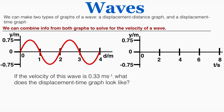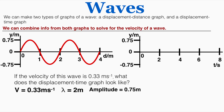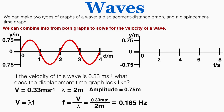We can also create graphs of motion given the other graph and the velocity. If the velocity of this wave is 0.33 meters per second, and the wavelength from the displacement-distance graph is 2 meters with an amplitude of 0.75 meters, plugging into the velocity equation and rearranging gives a frequency of 0.165 Hertz, and therefore a period of 6 seconds. So this wave has a period of 6 seconds and an amplitude of 0.75 meters — drawing that out gives an amplitude of 0.75 meters and one complete wave pattern in 6 seconds. That's what you need to understand to use displacement-distance graphs, displacement-time graphs, and calculate the velocity of a wave.